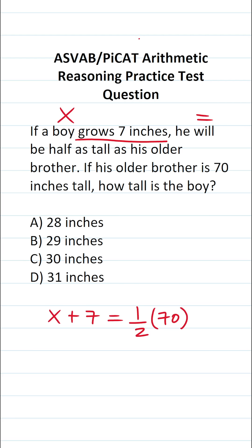The first thing I want to do is figure out what half of 70 is. If you're good at mental math, you would know that that is going to be 35. So this becomes x plus 7 equals 35.